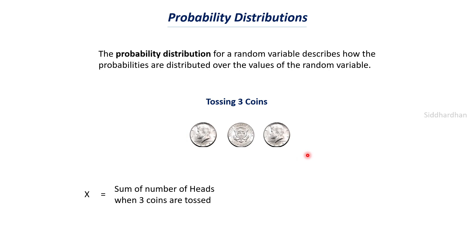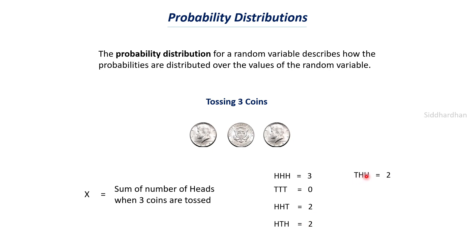Let's see what the different possible outcomes are. We may get three heads — random variable value is 3. We may get all three tails — random variable value is 0. We may get two heads in different orders: heads-heads-tails, heads-tails-heads, or tails-heads-heads — all giving value 2. And we may get one head in different orders: heads-tails-tails, tails-heads-tails, tails-tails-heads — all giving value 1. These are the different possible values we can get for random variable x.